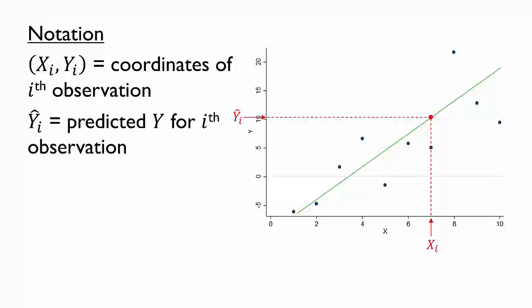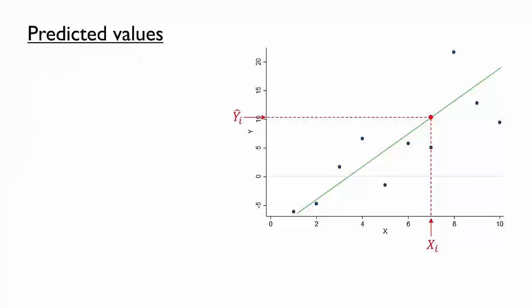We've identified a predicted value graphically, but how could we accomplish this calculation algebraically? You learned in an algebra class that the mathematical equation for a line has the form y equals mx plus b, where m is the slope of a line and b is its y-intercept.